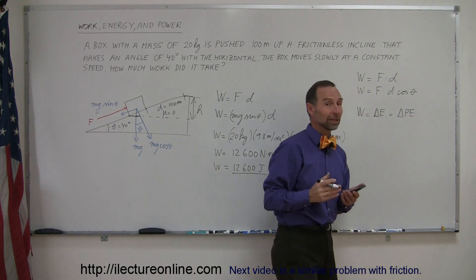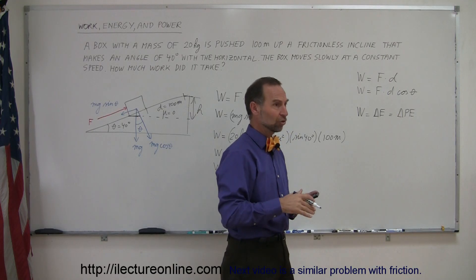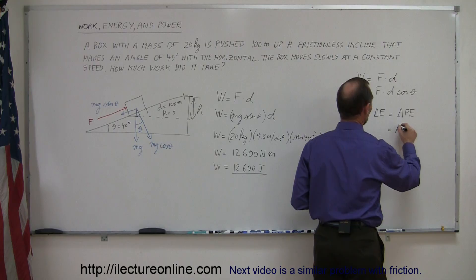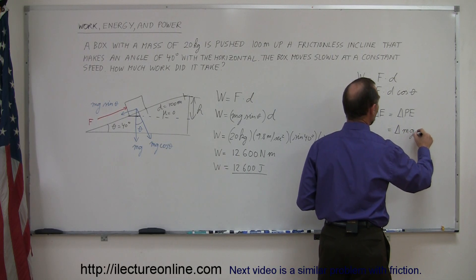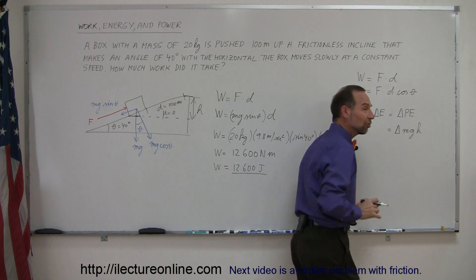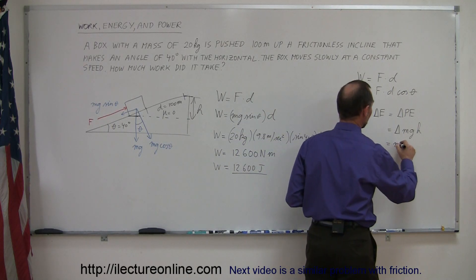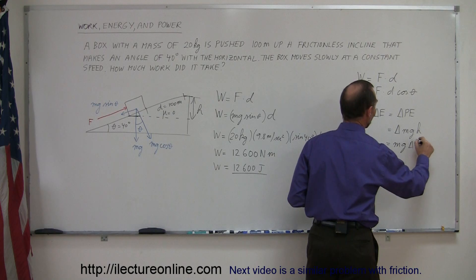This equals the change in potential energy. By definition, the potential energy is mass times g, the acceleration of gravity, times height. So this equals the change in mgh. The mass isn't changing, g isn't changing, h is changing. So that's equal to mg times the change in height.